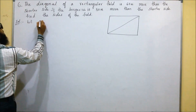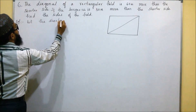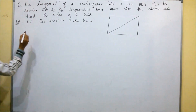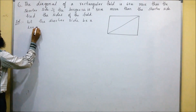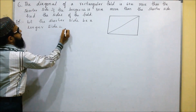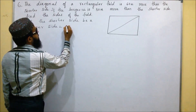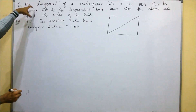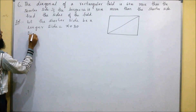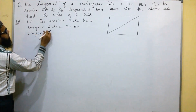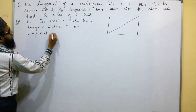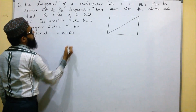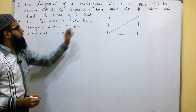So let the shorter side be x. Then we have to take the longer side. They said that the longer side is 30 more than the shorter side, so x plus 30. Then the diagonal — they said that the diagonal is 60 meters more than the shorter side, so diagonal is x plus 60.